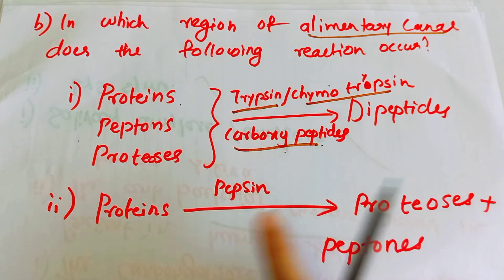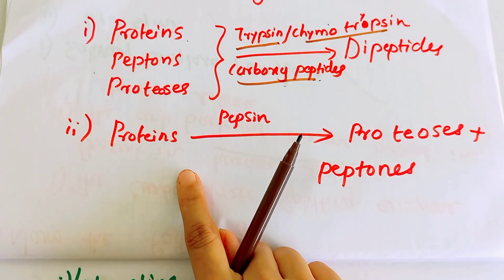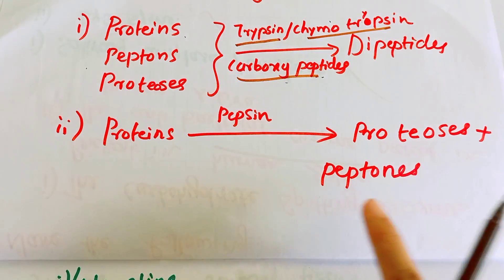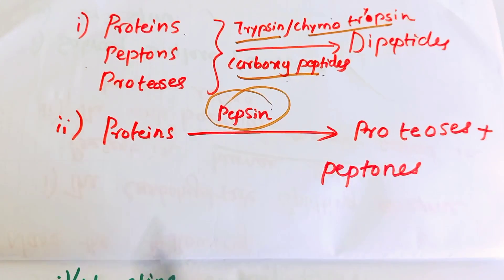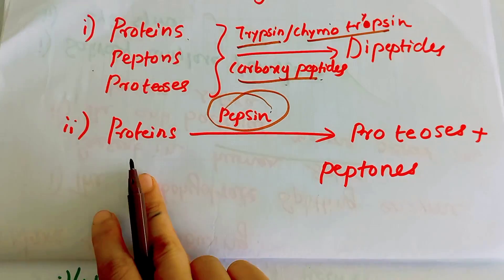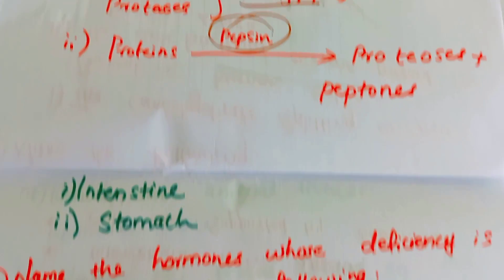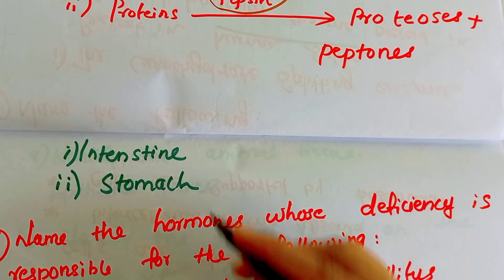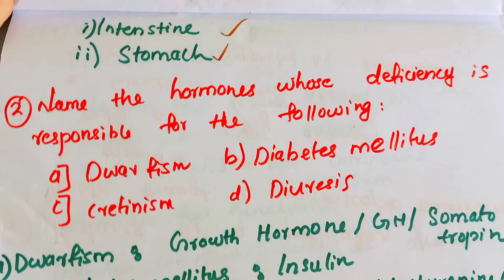The reaction involving proteins being broken down by pepsin occurs in the stomach. In the alimentary canal, this protein digestion reaction takes place in the stomach region.